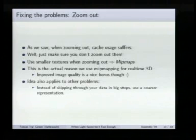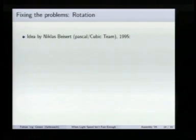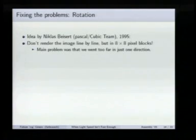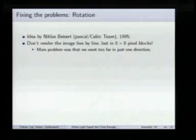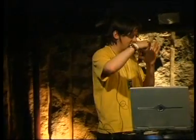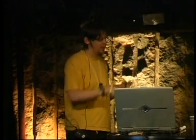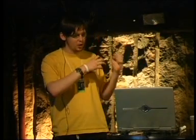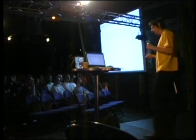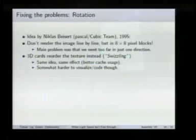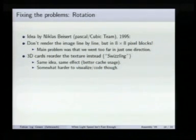Rotation is a somewhat different beast and needs a different strategy. The idea — first described, to my knowledge, by Niklas Beisert of Cubic Team in 1995 — is very simple: instead of rendering the image line by line, you render 8x8 pixel blocks. The main problem was going too far in one direction in the source image before reusing that line again. By rendering small squares, we ensure we never get too far from the original pixel position. What 3D cards do is actually reorder the texture instead, which is called swizzling or texture swizzling — the same idea with the same effect on cache usage, just reordering the source instead of the destination image.